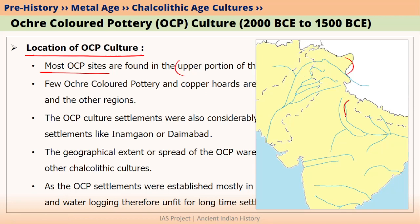This is the Ganga river and this is the Yamuna river. The region lying between these rivers is called the Doab region. Since this Doab region lies between the Ganga and Yamuna rivers, we call it the Ganga Yamuna Doab.